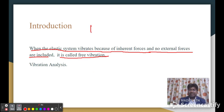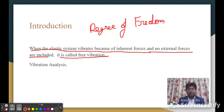Before moving further, we should know what is degree of freedom. Degree of freedom is the number of independent coordinates necessary to completely specify the configuration or position of a system at any time. This is the degree of freedom.